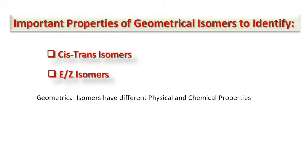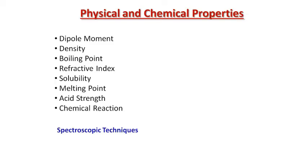Since geometrical isomers have different physical and chemical properties, in this lecture we are going to discuss some physical and chemical properties of geometrical isomers — that are dipole moment, density, boiling point, refractive index, solubility, melting point, acid strength, and chemical reactions. Apart from these, spectroscopic techniques are also discussed in this lecture that are helpful to distinguish between cis and trans isomers.